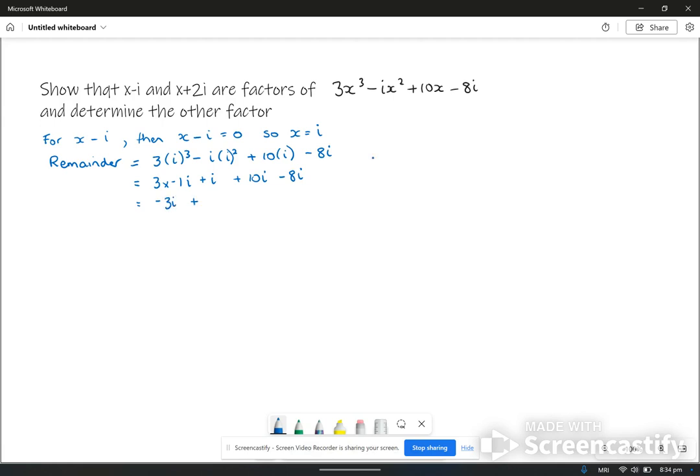Carrying on with this, together it gives you negative 3i plus i plus 10i minus 8i. That gives me negative 11i plus 11i which is 0. Therefore x minus i is a factor.